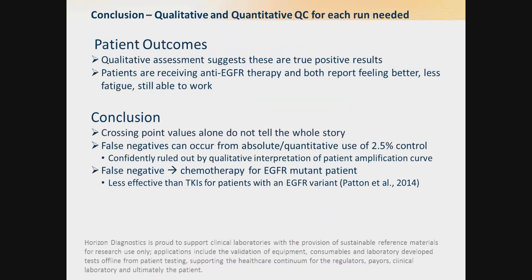In conclusion, from qualitative assessment, these were ruled as true positive diagnostic results. The patients are actually receiving anti-EGFR therapy and both report feeling better with less fatigue and are able to work. Crossing point values do not tell the whole story: false negatives can occur if you use the cutoff as an absolute cutoff. But if you look at each patient amplification individually, qualitative interpretation makes it very easy to ensure that these are not occurring.